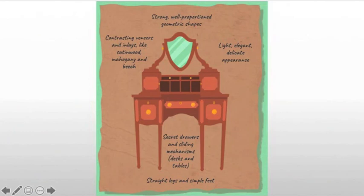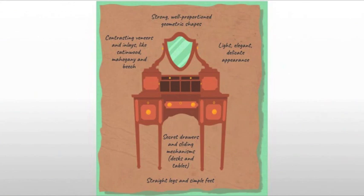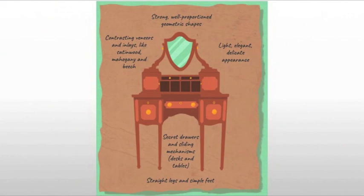Looking at the features of Sheraton furniture: we're going to see strong, well-proportioned geometric shapes, contrasting veneers and inlays, the use of light, elegant, delicate forms, and a lot of secret drawers and sliding mechanisms — very similar to the Harlequin furniture we saw from Louis XVI. Also straight legs and simple feet. This is meant to be a very pragmatic piece where the beauty comes from the elegance and curvilinear form rather than from a giant behemoth of a piece from the Baroque. These tend to be simpler, looking for that cleaner appearance — the neoclassical as a reaction against the ostentatious over-decoration of the Baroque and the Rococo.